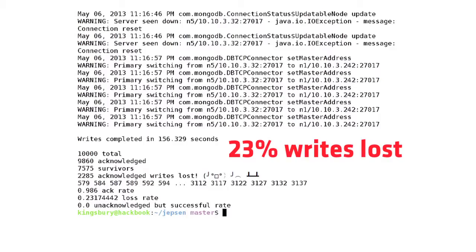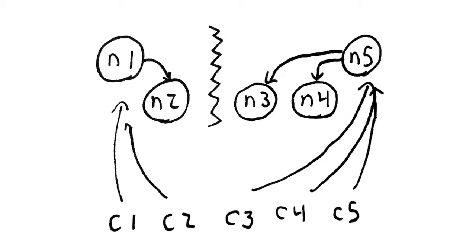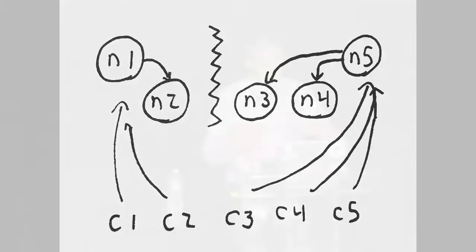So we say unsafe was clearly not the right default, let's go to 'safe.' Safe loses 34% of writes. Why? Again, there are two primaries — maybe not the same physical wall-clock time, although there could be if you have clock skew — and they're not causally connected. So we say there's this other setting, 'replica safe.' Let's try that one — I'm sure that'll work.